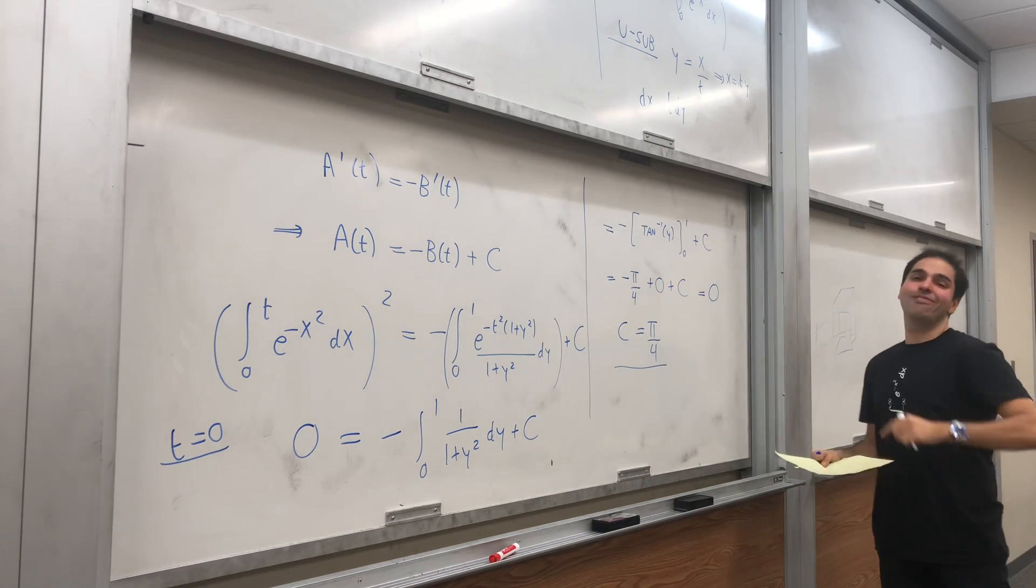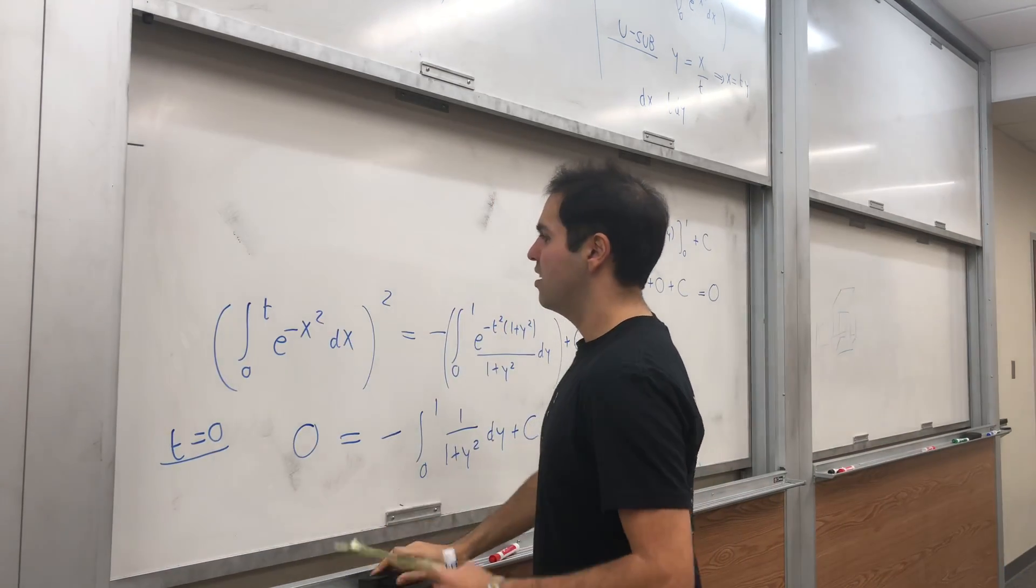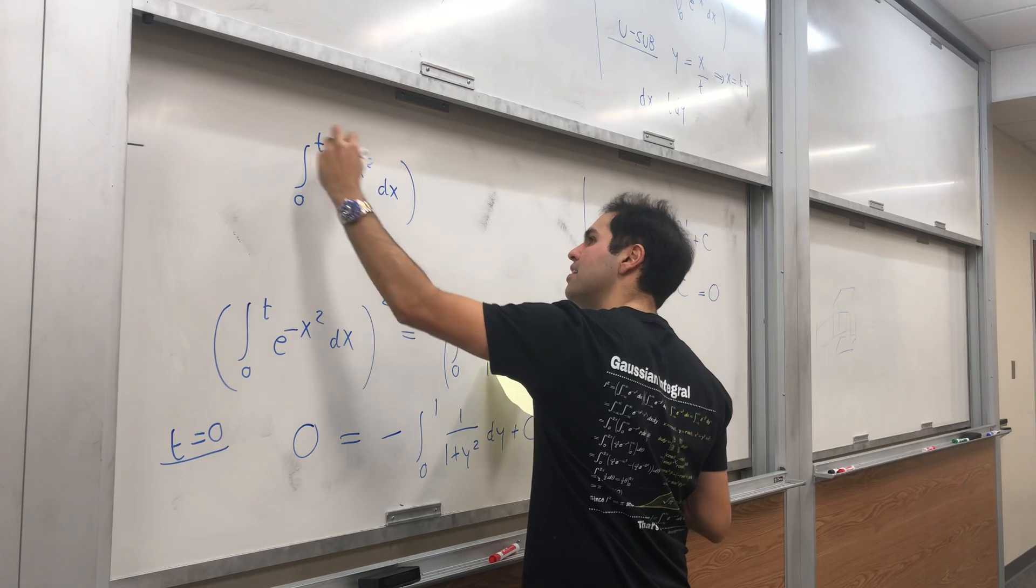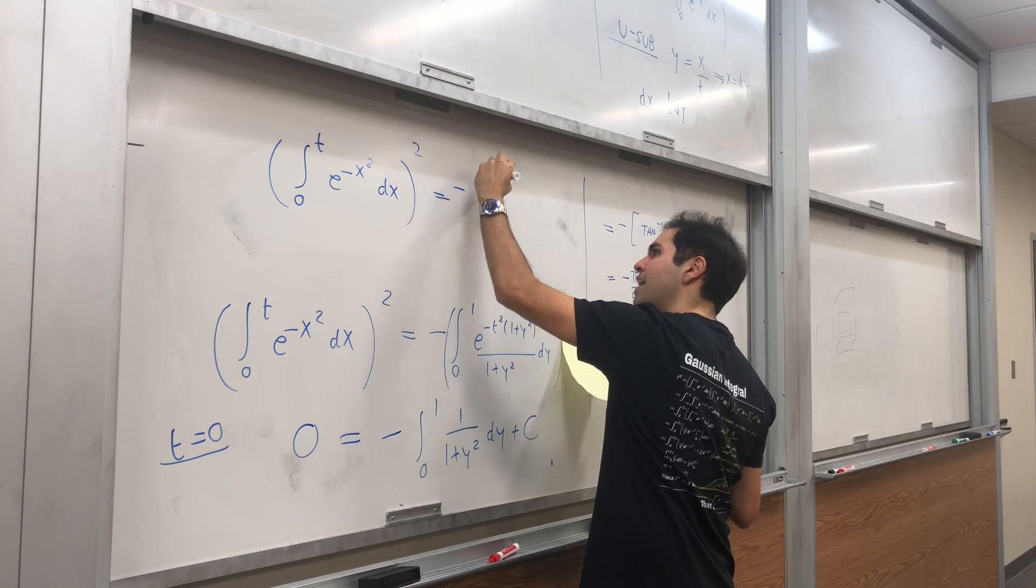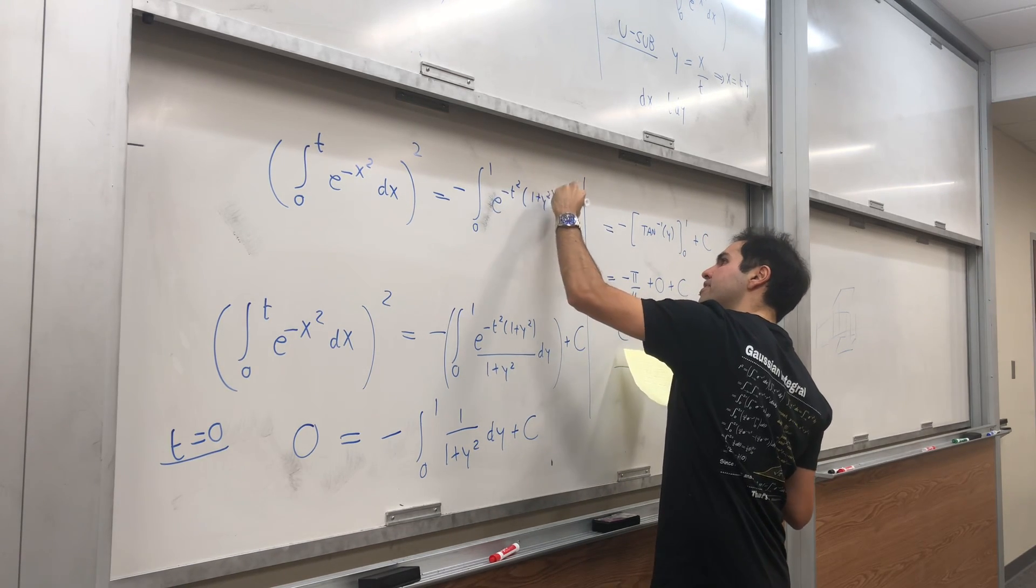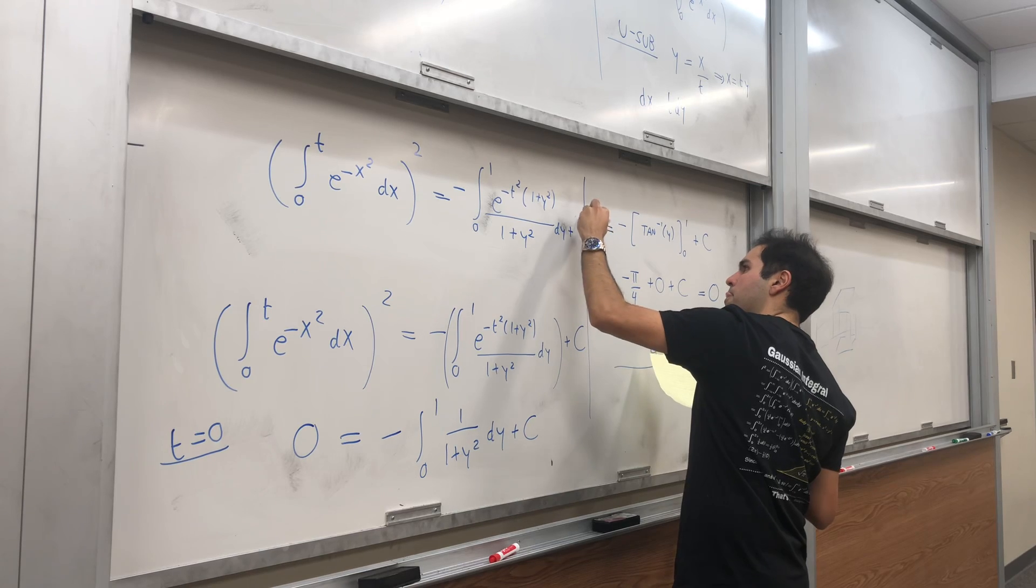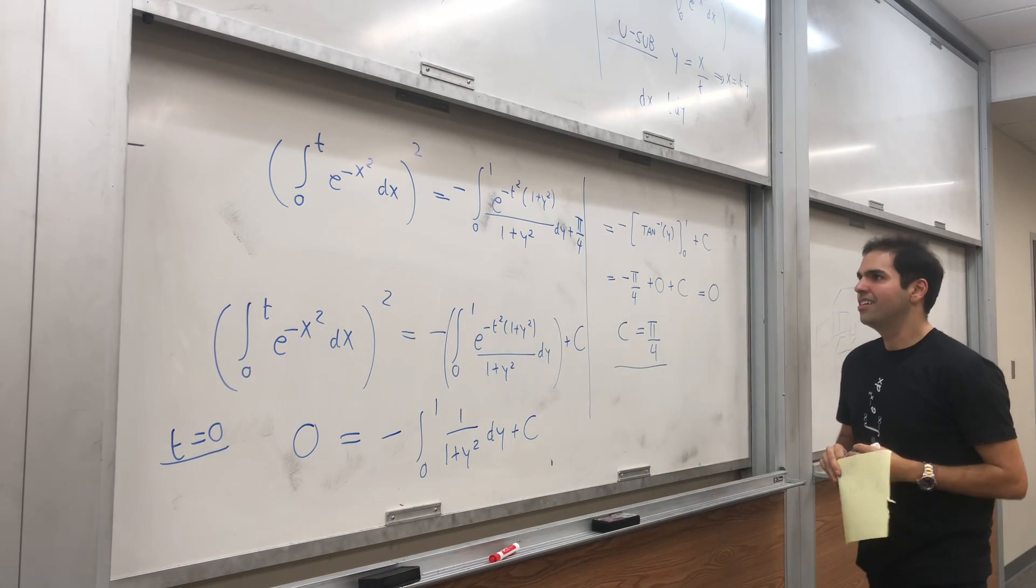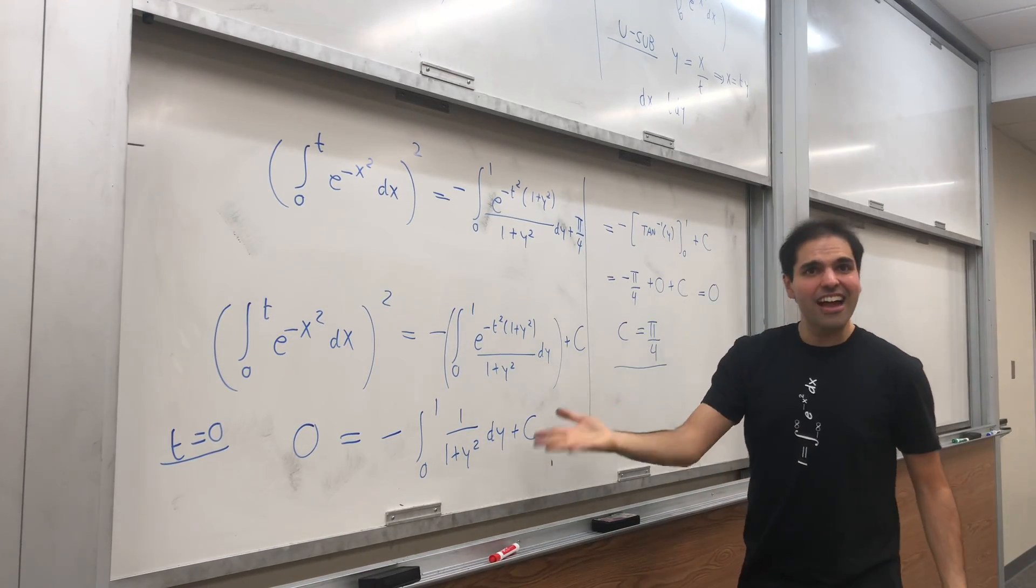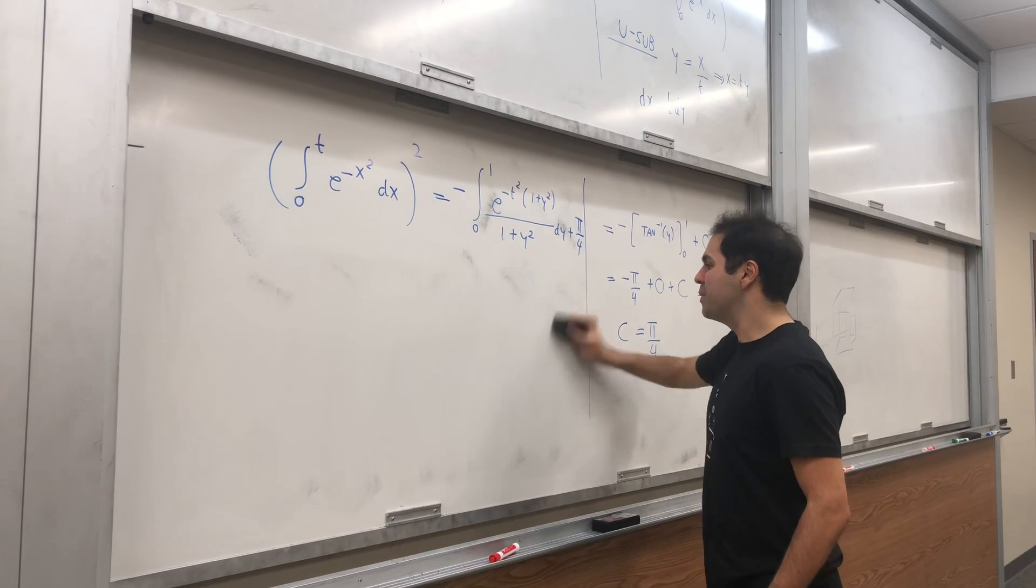But, that's not the answer, that's the value for our constant. And in particular, what we get here is that the integral from 0 to t of e of negative x squared dx squared, equals to minus integral from 0 to 1 of e of negative t squared, 1 plus y squared over 1 plus y squared dy, plus pi over 4. So, that was on the one hand. On the one hand, plugging in t equals to 0, we get this. On the other hand, remember, we want our answer, which is a of infinity. So, now, let's just plug in t equals to infinity.